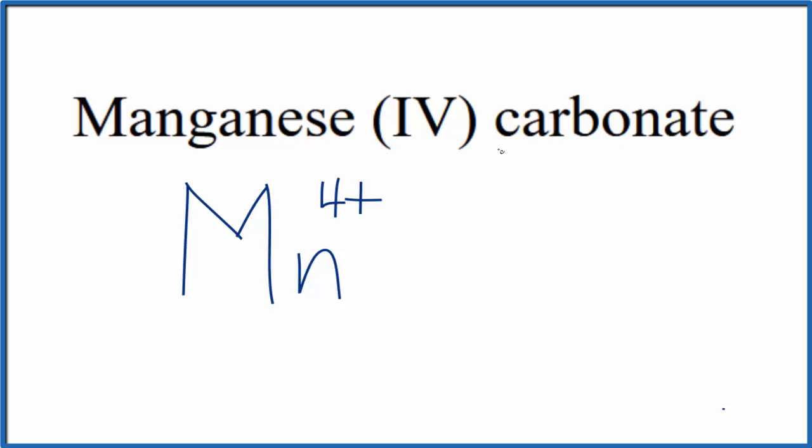Next, we'll write the formula for the carbonate. This ATE ending means you won't find it on a periodic table. This is a polyatomic ion. So you either memorize that the carbonate ion is CO3 with a charge of 2-, or if you're allowed, you look it up on a table of polyatomic ions.